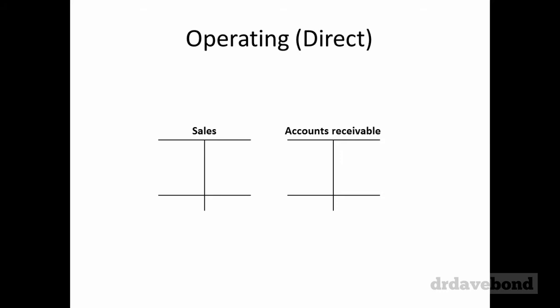For cash received from customers, the two accounts we need from this question are sales and accounts receivable. We drop in the T-accounts and put in the starting and ending balances for accounts receivable from the balance sheet — a start of 55,000 and an ending balance of 45,000. We also know from the profit and loss statement that there were $450,000 worth of sales, which would be debit accounts receivable, credit sales. I'm assuming all sales go through accounts receivable, which makes life easier.